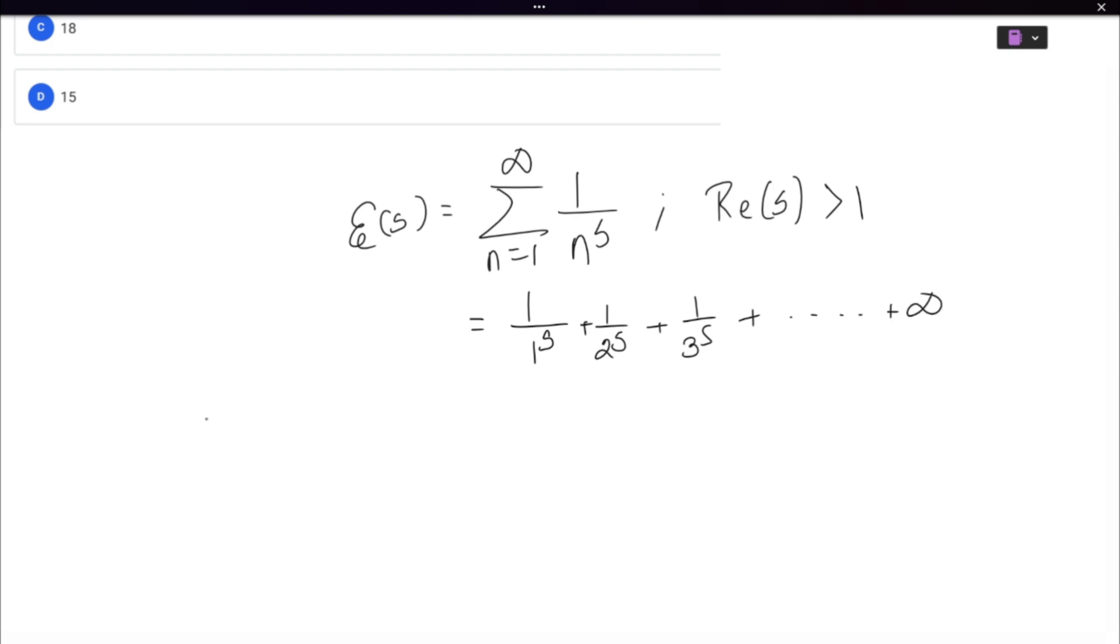A very famous example I have also covered only a few days ago is the Basel problem, where we have zeta of 2, which is the sum of squares of the reciprocals of the natural numbers, and that sum comes out to pi square upon 6.